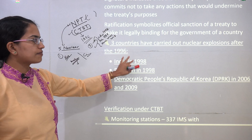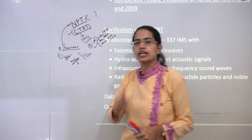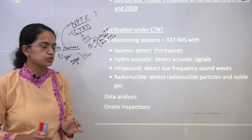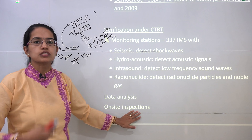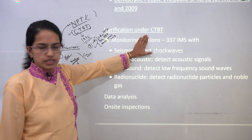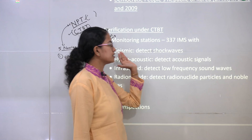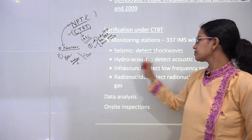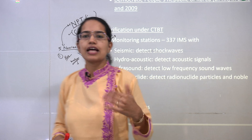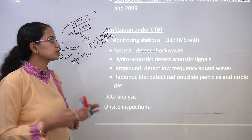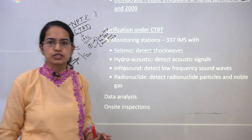Organizations verify compliance with CTBT through three ways: installation of monitoring stations, analysis of data, and on-site inspection. The most common method is monitoring stations — there are nearly 337 monitoring stations based on four parameters: seismic (detecting shock waves), hydroacoustics (detecting acoustic waves), infrasound (detecting low-frequency waves), and radionuclide (detecting radionuclides and noble gases). These verify whether countries are complying with their nuclear obligations.